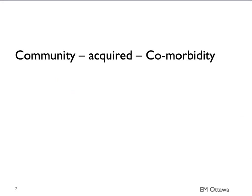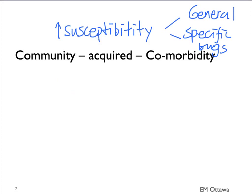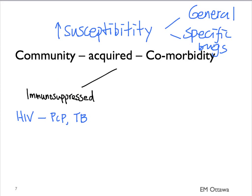What about patients with community-acquired pneumonia who have a comorbidity? They are also subjected to all the organisms we talked about before. However, their comorbidities might mean they are either more susceptible to infection in general, or more susceptible to certain organisms. For patients who are immunosuppressed, it depends on why they are immunosuppressed. Patients with HIV are more likely to get PCP pneumonia and TB. Those without a spleen are more susceptible to encapsulated organisms such as Strep. Those immunosuppressed due to medications such as chemotherapy drugs or steroids are more susceptible to general infection.